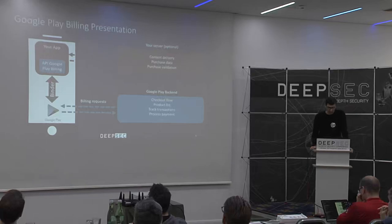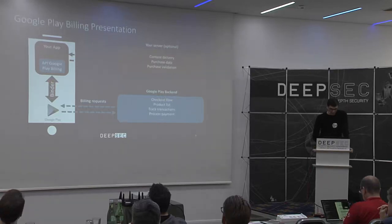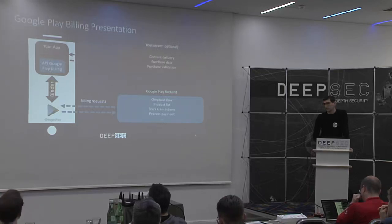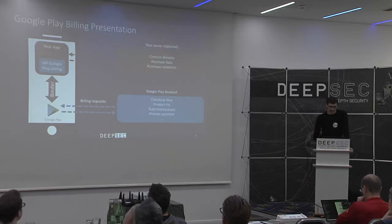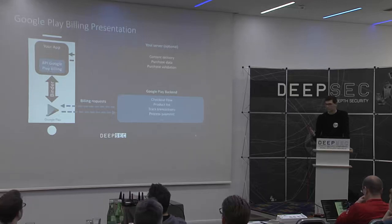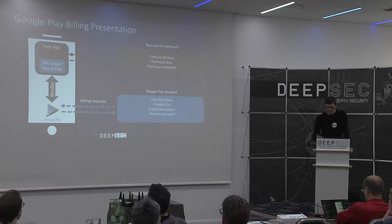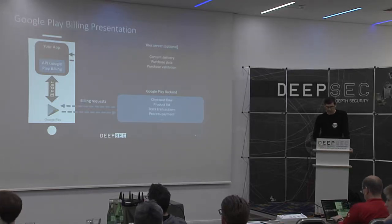To show you more technically how it works: your application uses the Google Play Billing API, and to use this API you need the Google Play Store installed on your device. When a user wants to buy a product, they select it, and your application sends an intent to the Google Play Store saying this user wants to buy this product. The Play Store then manages the entire payment process — asking for a credit card, PayPal, voucher code, etc. There's a billing request performed between the Play Store and the Google backend.